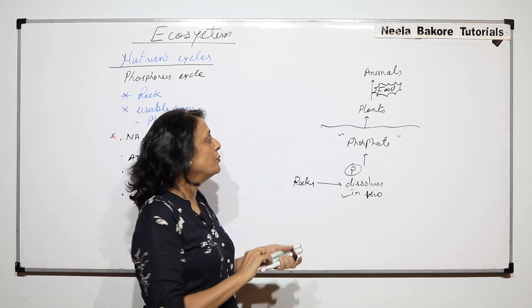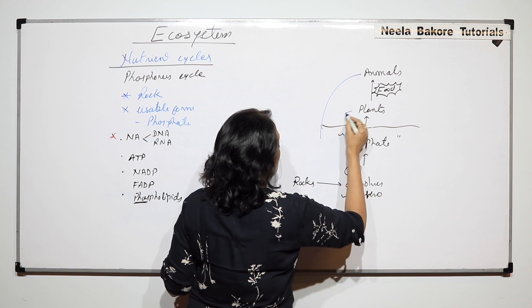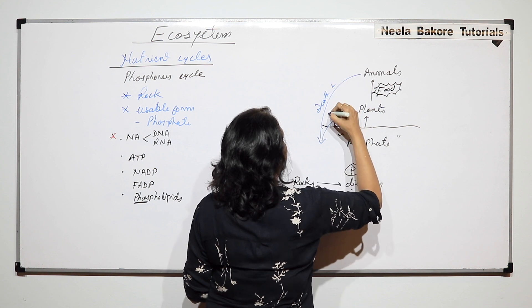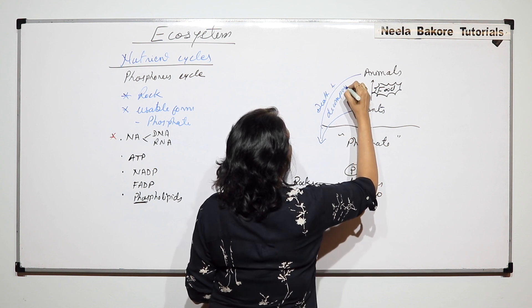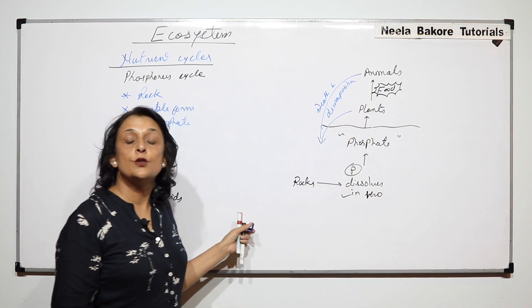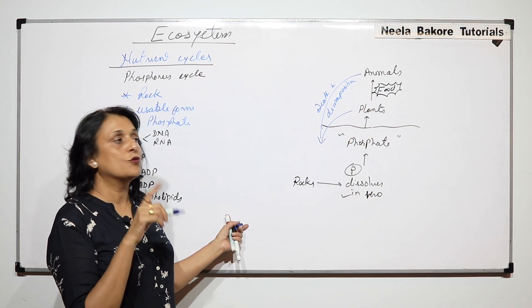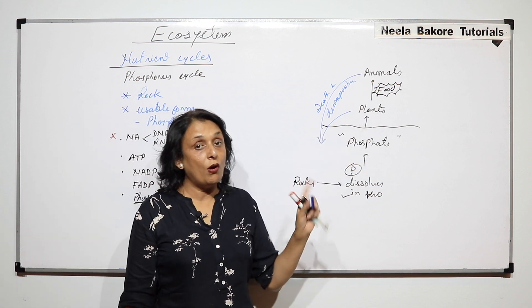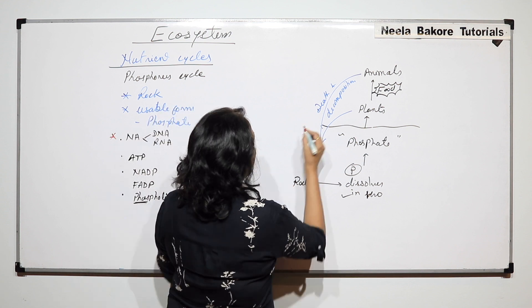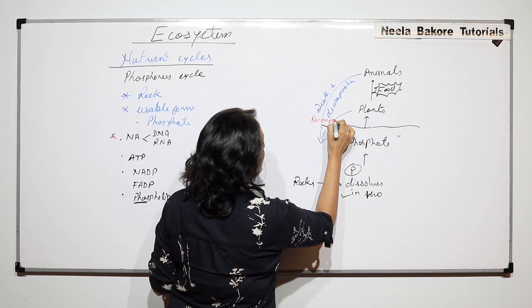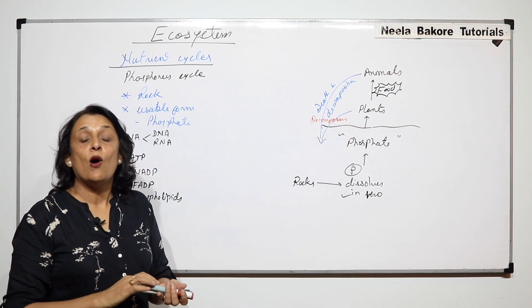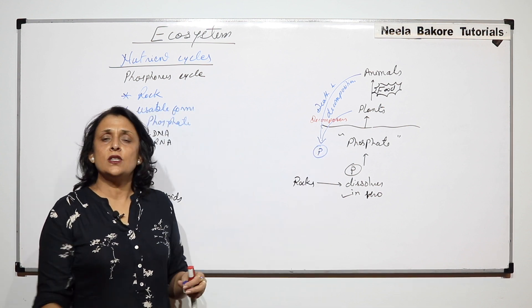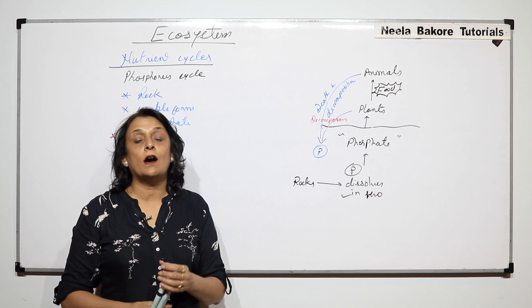Death and decomposition of both, when plants and animals die, there are decomposers which are involved. When we talk of biotic community we have to talk about the producers, consumers and the decomposers. With the help of decomposers, all this phosphate comes back into the soil. This is a very simple cycle.